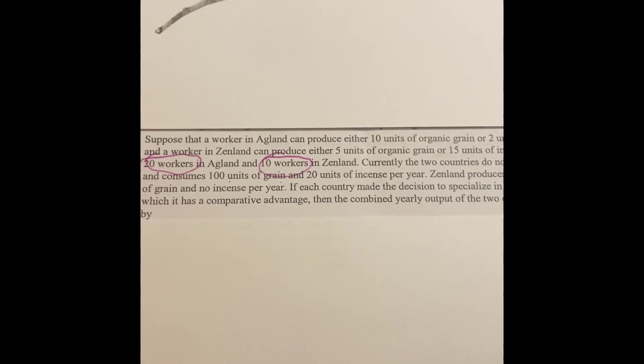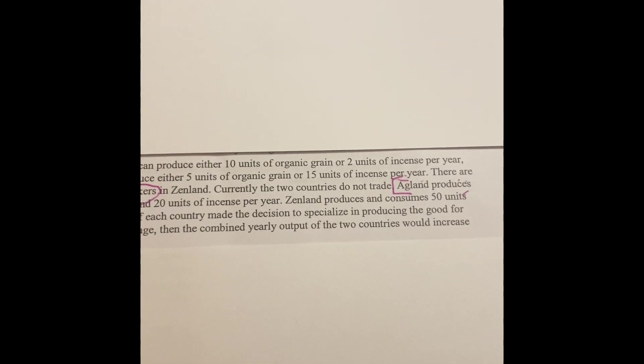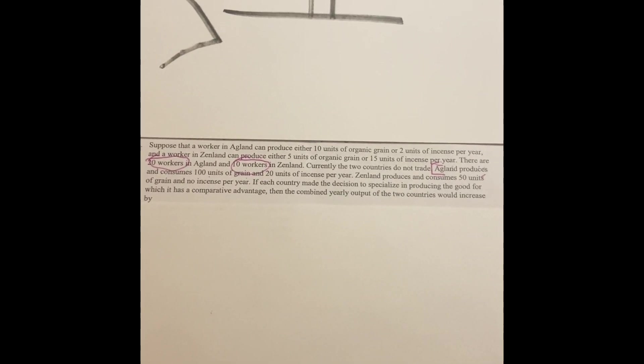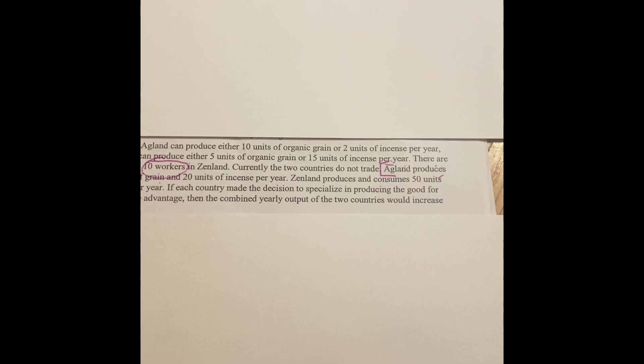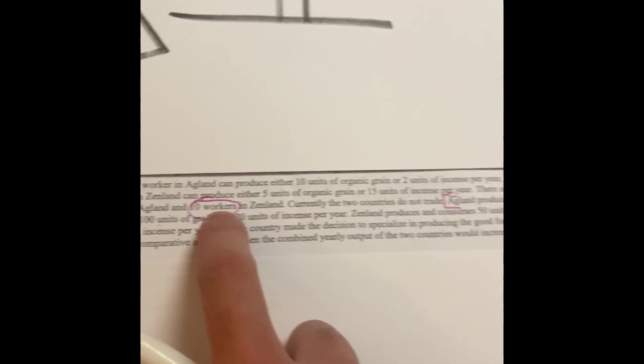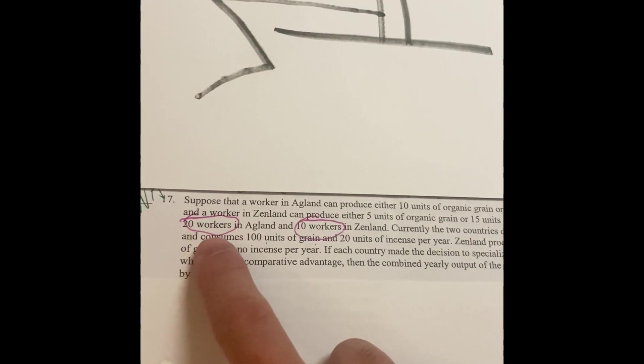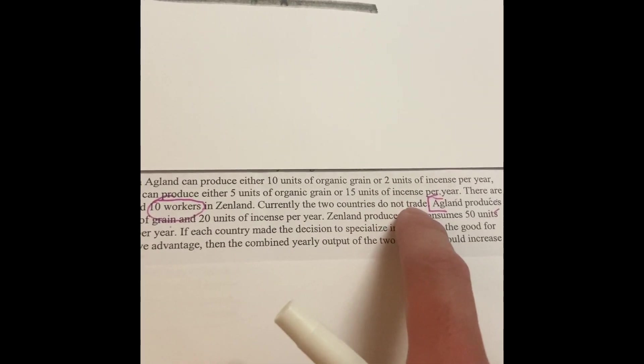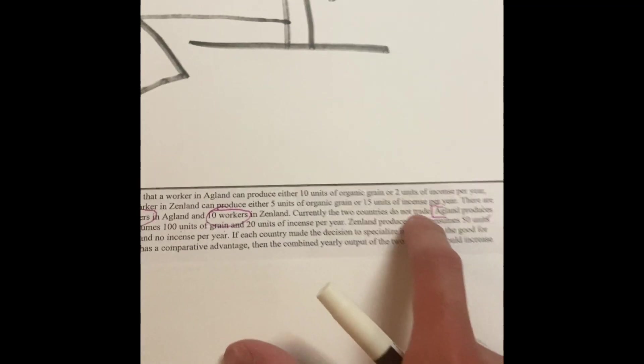Suppose that a worker in Agland can produce either 10 units of organic grain or 2 units of incense per year. And a worker from Zenland can produce either 5 units of organic grain or 15 units of incense per year. So there are two countries: Agland and Zenland. If there are 20 workers in Agland and 10 workers in Zenland, currently the two countries do not trade.